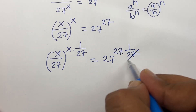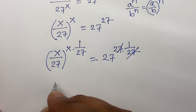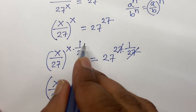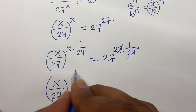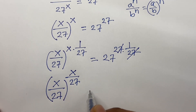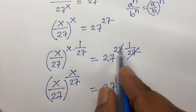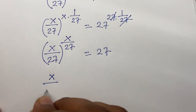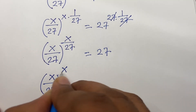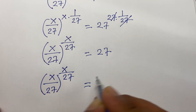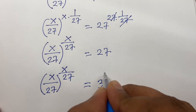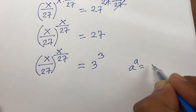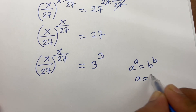The exponents cancel on the right side. So we have (x/27)^(x/27) equals 27^1, which equals 27. Now, x/27 bracket to the power x/27 — recognizing that 27 equals 3^3 — we see this matches the form a^a = b^b, meaning a equals b. So x/27 equals 3.